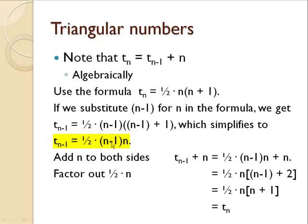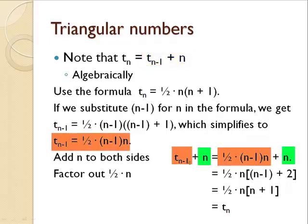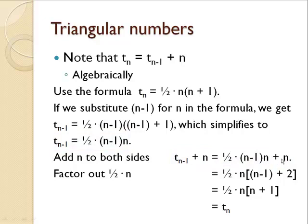If we add n to both sides, I'm trying to get a formula that looks something like this. T sub n minus 1 plus n is ½ times n minus 1 times n plus n. Factoring ½n from both terms on the right side gives me ½n times n minus 1 plus 2. This cleans up a little bit to be ½ times n times n plus 1, and that's the formula for T sub n. So we get that T sub n minus 1 plus n is equal to T sub n algebraically.